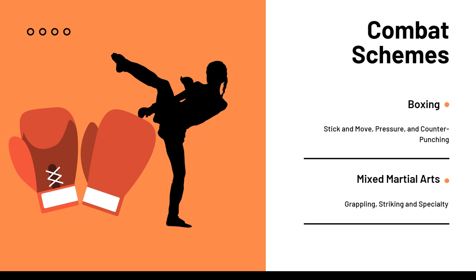Now let's look at combat sports schemes — or more accurately, the stylistic profiles of fighters. In boxing, the stick-and-move style emphasizes maintaining distance, using footwork and lateral movement to control range, and scoring with quick accurate jabs and straight punches. The pressure fighter involves relentless forward movement, cutting off the ring, and applying constant pressure with aggressive punches, combinations, and body shots. The counter puncher waits for opponents to commit to attacks and then capitalizes on openings with precise, well-timed counters.